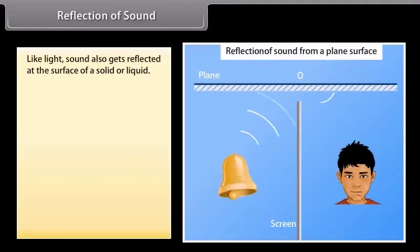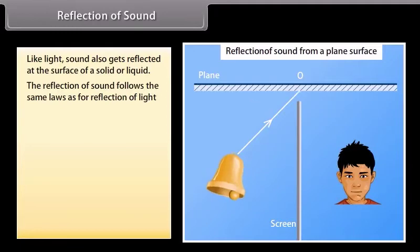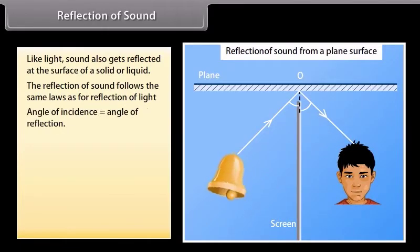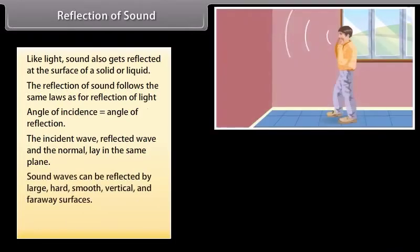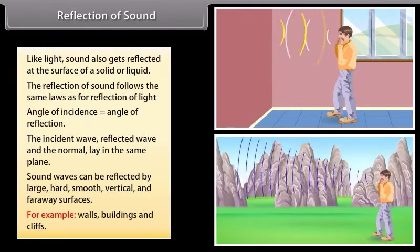Reflection of sound. Like light, sound also gets reflected at the surface of a solid or liquid. The reflection of sound follows the same laws as for reflection of light: angle of incidence is equal to the angle of reflection. The incident wave, reflected wave, and the normal lie in the same plane. Sound waves can be reflected by large, hard, smooth, vertical, and far away surfaces. Example: walls, buildings, and cliffs.